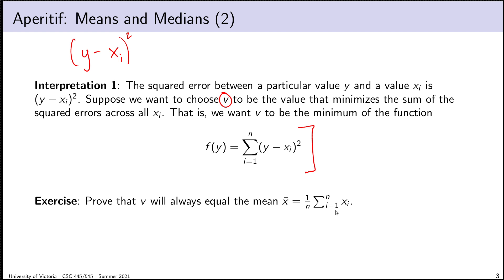I'm going to decide this squared error is my measurement of error between an estimator and a data point. I want to find a particular value v to be my representative that gives me the minimum total squared error across all data points. Specifically, if I define the function f of y, I want v to be the minimum of this function — minimizing the sum of squared errors between my representative and each individual data point. To clarify: f is a function giving the squared error of a particular estimator compared to all data points, and v is the argument to f that minimizes its value. It turns out the minimum value of f is attained at the mean.